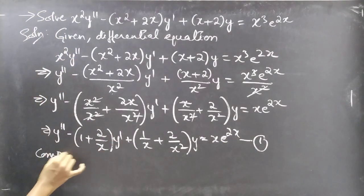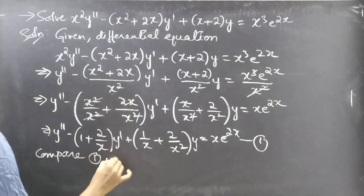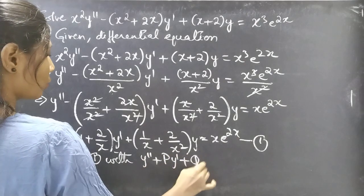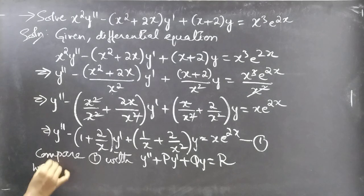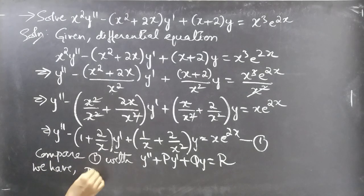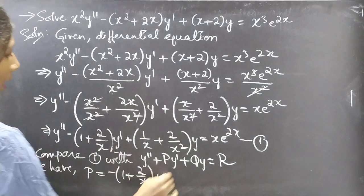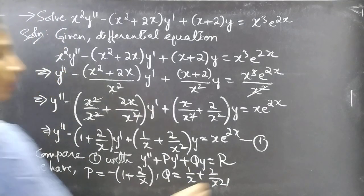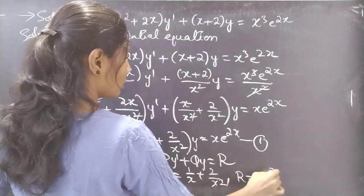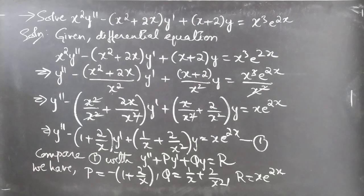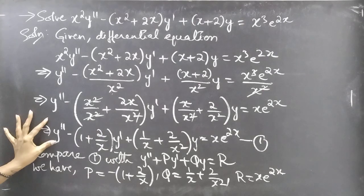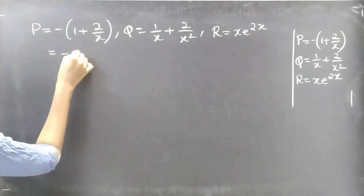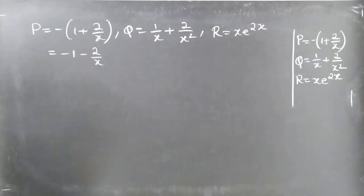Now compare equation 1 with the standard form of the second order linear differential equation: y double dash plus P y dash plus Q y equal to R. We have P equal to minus (1 plus 2 by x), Q equal to (1 by x plus 2 by x squared), and R equal to x e power 2x.